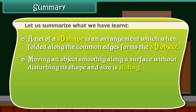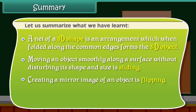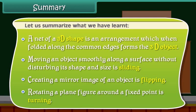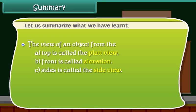Moving an object smoothly along a surface without disturbing its shape and size is sliding. Creating a mirror image of an object is flipping. Rotating a plane figure around a fixed point is turning. The view of an object from the top is called the plan view, from the front is called elevation, and from the side is called the side view.